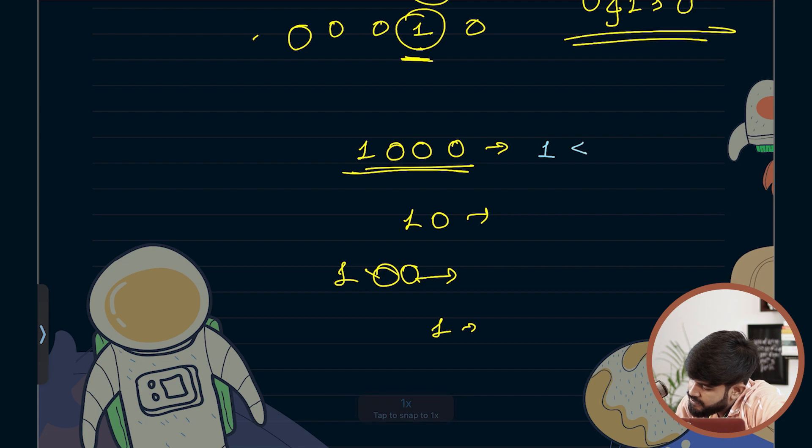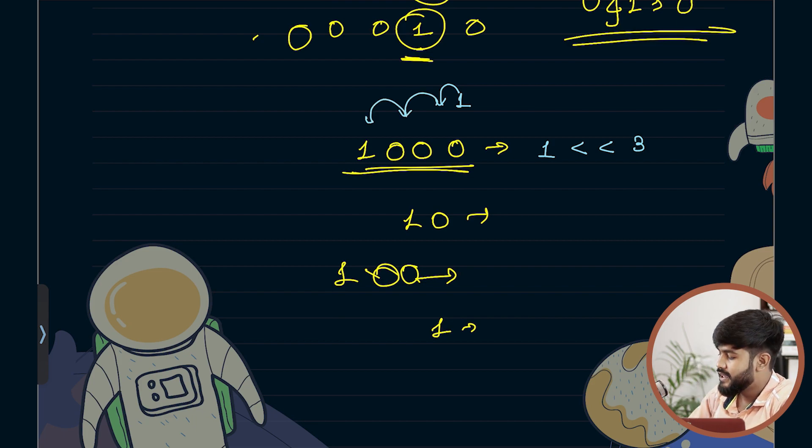What is the binary representation of 1? So 1 when shifted by 1 it would come here, then 2, and then 3.